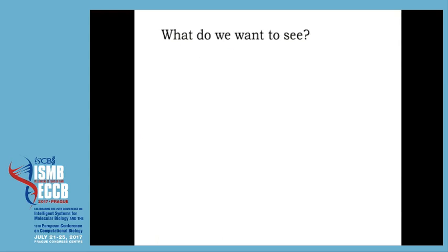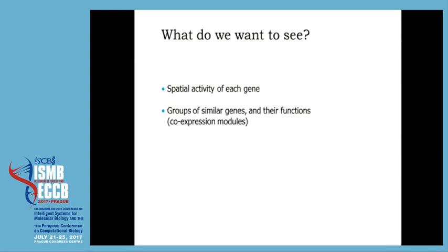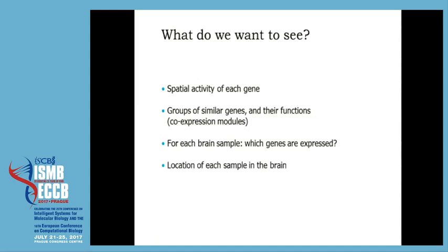If you look at a brain slice visualization, you can see one gene's expression — red for high, blue for low — but that's just one gene, and we have 20,000. So what would we like to see in a visualization? We want to see the spatial activity of each gene, groups of similar genes like co-expression clusters and perhaps their functions, and for each brain sample we'd want to know which genes are expressed there, plus the similarities between brain areas based on gene expression.